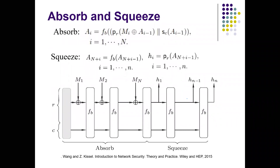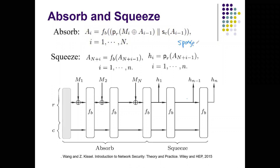Now let's look at how we construct a sponge function. A sponge really means you absorb some water and then you squeeze some water out. So the sponge has two phases: absorb and squeeze. You need to absorb first, and then squeeze after you have absorbed something.